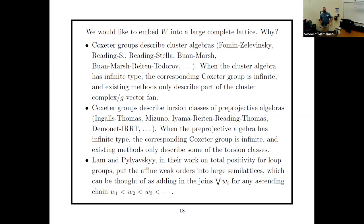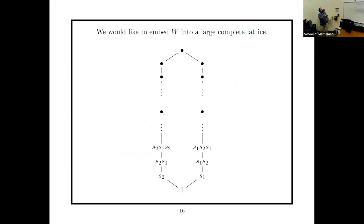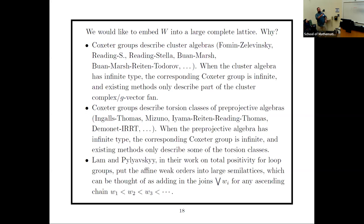Another motivation: Coxeter groups describe representation theory of preprojective algebras. For finite-type preprojective algebras the representation theory is well understood, but for infinite type you only see the portion inside the Tits cone. Also, Lam and Pylyavskyy have work on total positivity for loop groups where they index things by affine Coxeter groups and naturally need joins of ascending chains — exactly fitting into the structure I described.